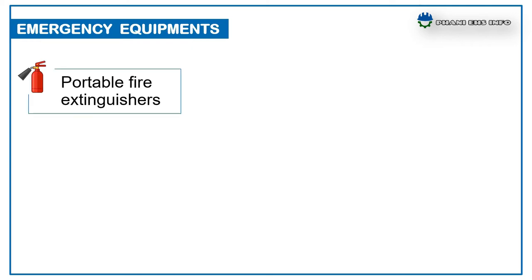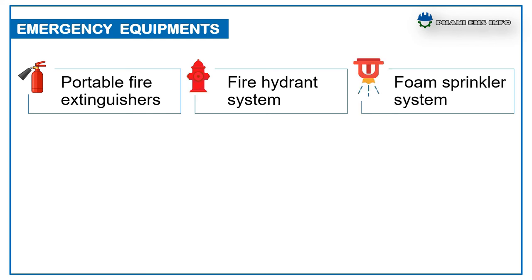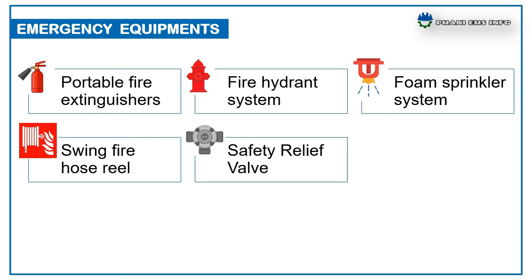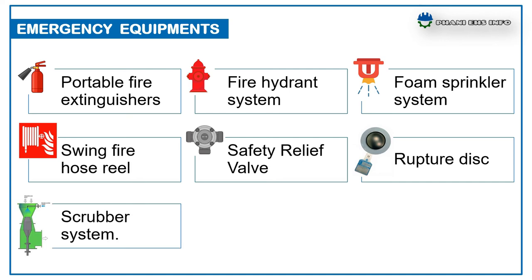The emergency handling systems to be provided at ANFD are: portable fire extinguishers, fire hydrant system, foam sprinkler system, and swing fire hose reel — these are the fire equipment. Safety relief valve and rupture disc are provided for ANFD, and the vent is connected to a dump tank and scrubbers — these are the safety systems.